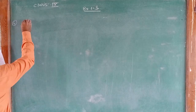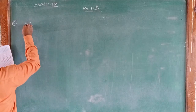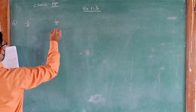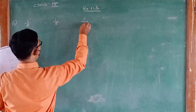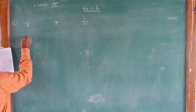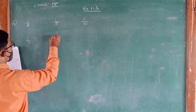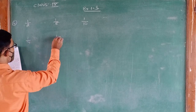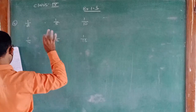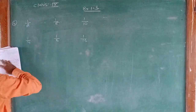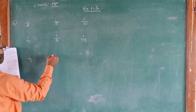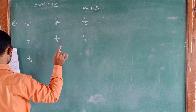Let's look at all the examples. We take 1 upon 2, 1 upon 5, 1 upon 10, then 1 upon 4, 1 upon 8, 1 upon 16. And in another group of examples: 1 upon 3, 1 upon 7.